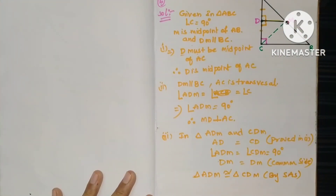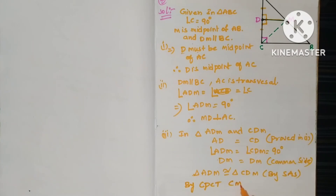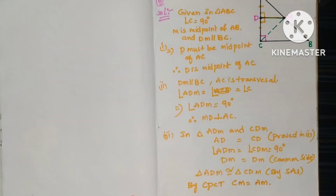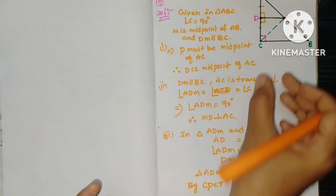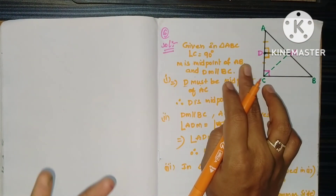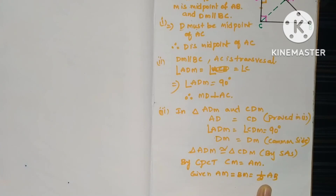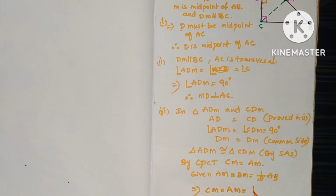By CPCT, corresponding parts of congruent triangles are equal, so CM equals AM. Since M is the midpoint of AB, AM equals BM equals half AB. Therefore CM equals AM equals half AB. This is what we had to prove. Hence proved.